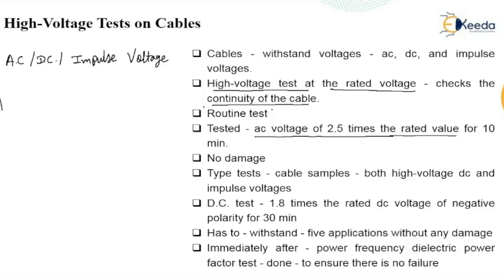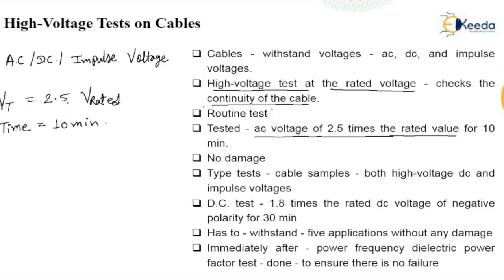The testing voltage Vt = 2.5 times the rated voltage of the cable, applied for a time period of 10 minutes. If there is no damage to the cable insulation during this period, the cable has passed the test. Type tests are done on cable samples using both high voltage DC and impulse voltages, taken from a few samples of the complete unit that has already passed the AC routine test.